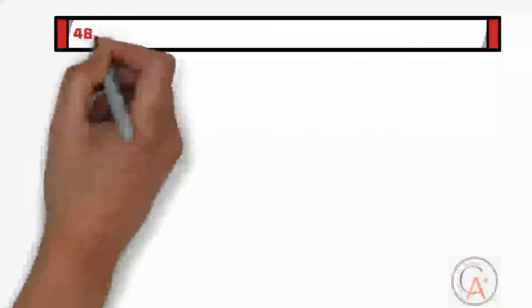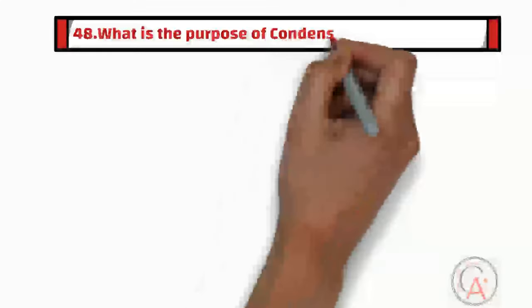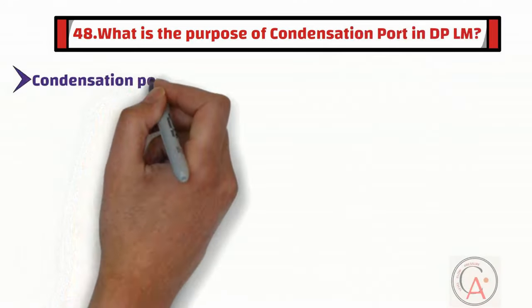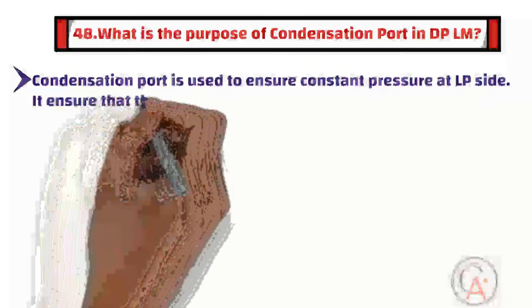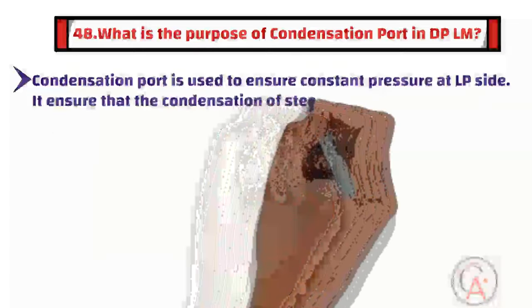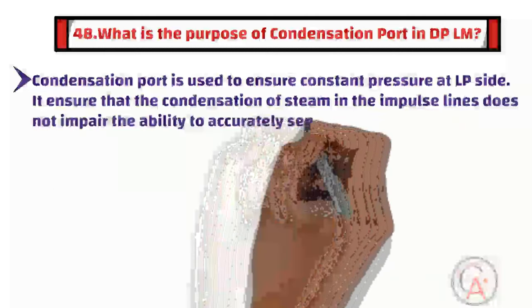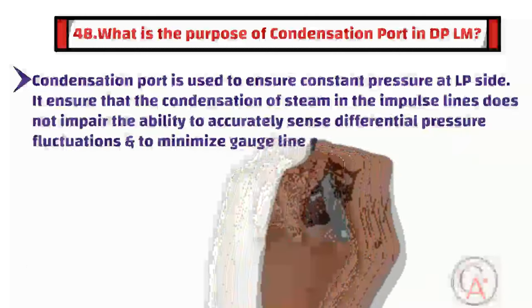The forty-eighth question is: what is the purpose of a condensation port in DP level measurement? A condensation port is used to ensure constant pressure at the low-pressure side. It ensures that the condensation of steam in the impulse lines does not impair the ability to accurately sense differential pressure fluctuations and minimizes gauge line error.